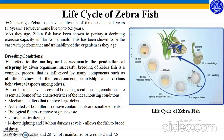Some characteristics of ideal housing conditions include mechanical filters that remove large debris, activated carbon filters that remove contaminants and small elements, and biological filters that remove organic waste, along with an ultraviolet sterilizing unit. A 14-hour lighting and 10-hour darkness cycle allows the fish to breed at dawn. The water temperature should be between 23 to 28 degrees Celsius, and the pH of the water should be maintained between 6.2 and 7.5.